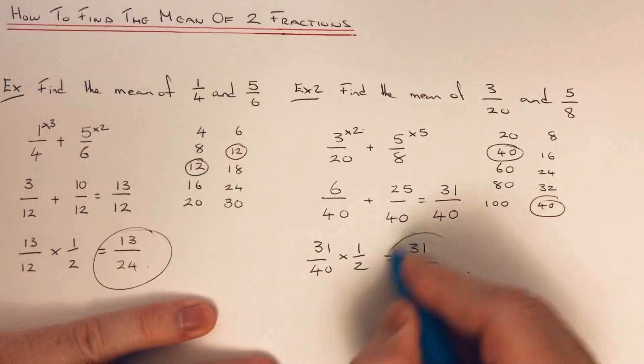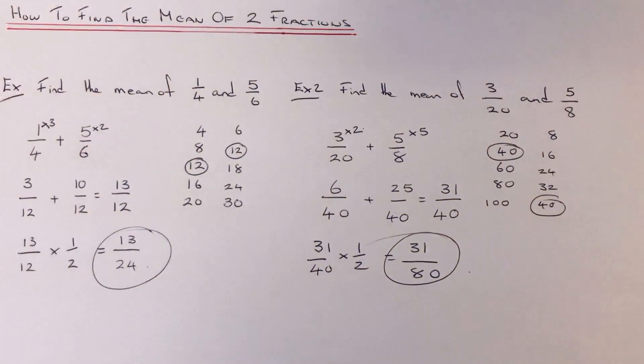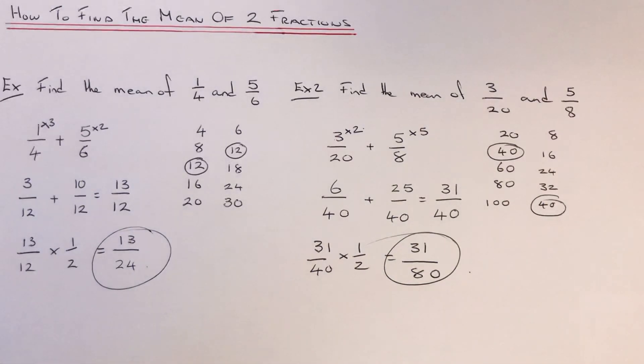So 31/80 is the mean of 3/20 and 5/8. So I hope you liked this video. If you did, like and subscribe. Thanks for watching, bye bye.